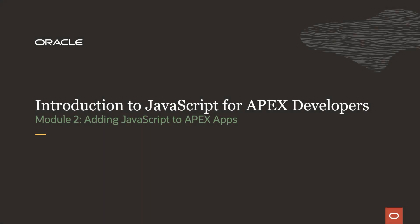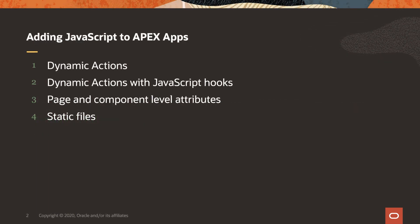Welcome to Introduction to JavaScript for Apex Developers. This is Module 2, Adding JavaScript to Apex Apps. In this module, I'll cover four different ways that you can add JavaScript to your Apex applications. I'll start with dynamic actions and then talk about dynamic actions with JavaScript hooks. Then I'll get into page and component level attributes, and finally I'll show you how you can use static files.